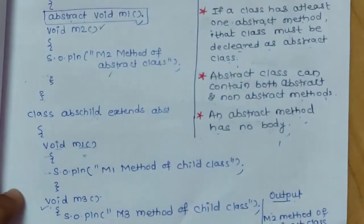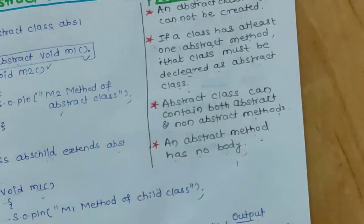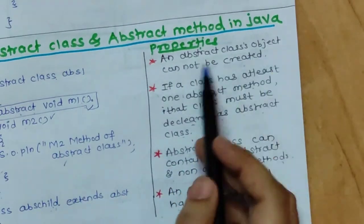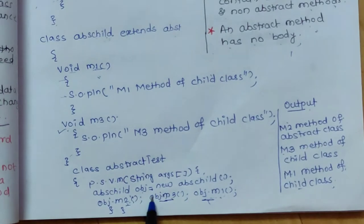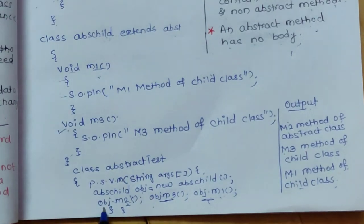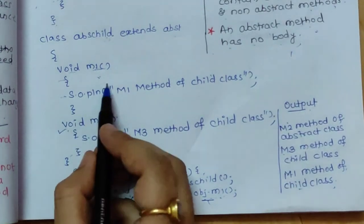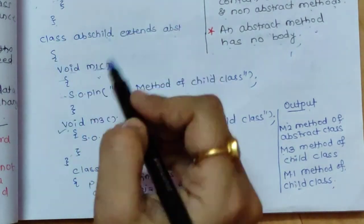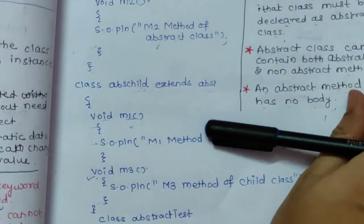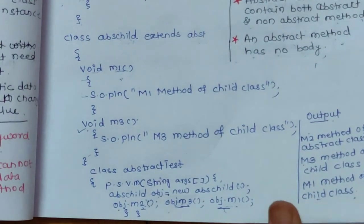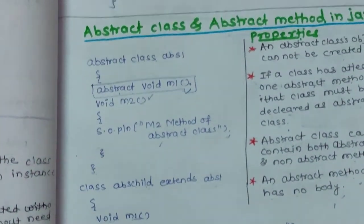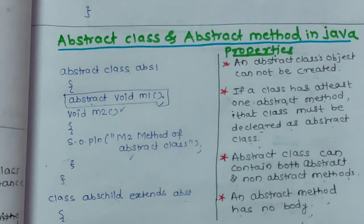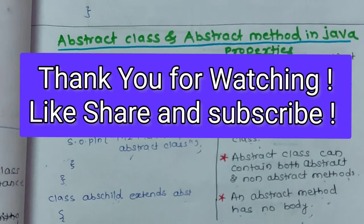Here, an object of abstract class cannot be created, so we have not created any object of the abstract class — we created an object of the child class, and the child class has inherited the abstract class, that's why it is accessible. This is the concept behind abstract class and abstract method in Java. That's all for this video. Thank you for watching and don't forget to like, share, and subscribe to see more videos on this topic.